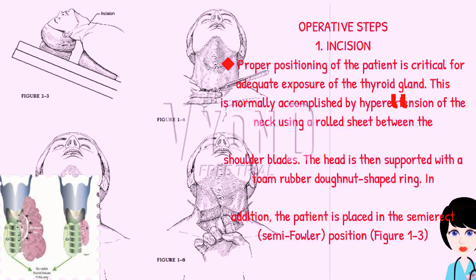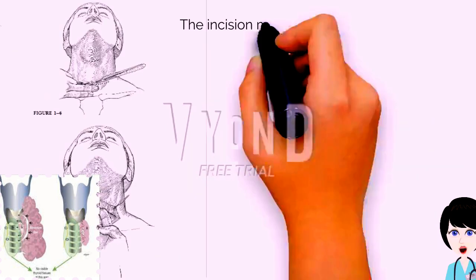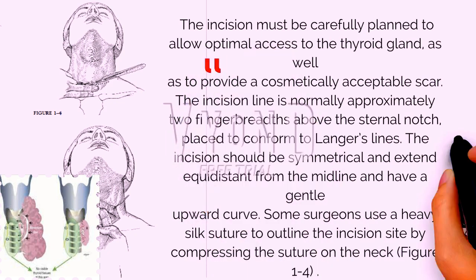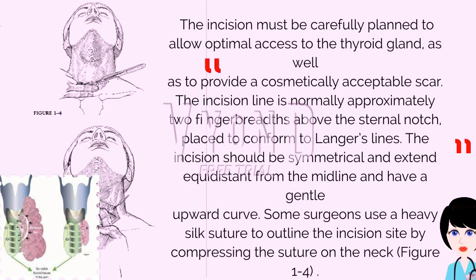In addition, the patient is placed in the semi-erect semi-Fowler position, figure 1-3. The incision must be carefully planned to allow optimal access to the thyroid gland, as well as to provide a cosmetically acceptable scar. The incision line is normally approximately 2 finger-breadths above the sternal notch, placed to conform to Langer's lines. The incision should be symmetrical, extend equidistant from the midline, and have a gentle upward curve. Some surgeons use a heavy silk suture to outline the incision site by compressing the suture on the neck, figure 1-4.